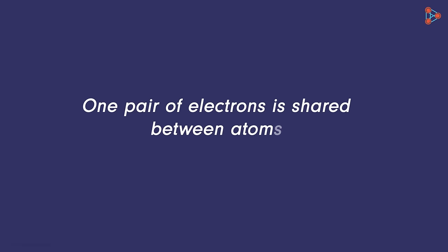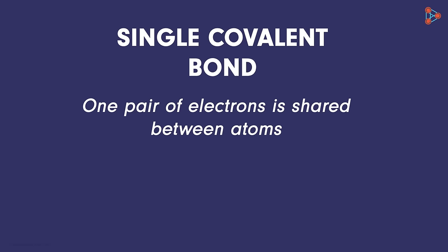Such a type of covalent bond where one pair of electrons is shared between the atoms is called a single covalent bond. It is denoted by drawing a single line between the two atoms.